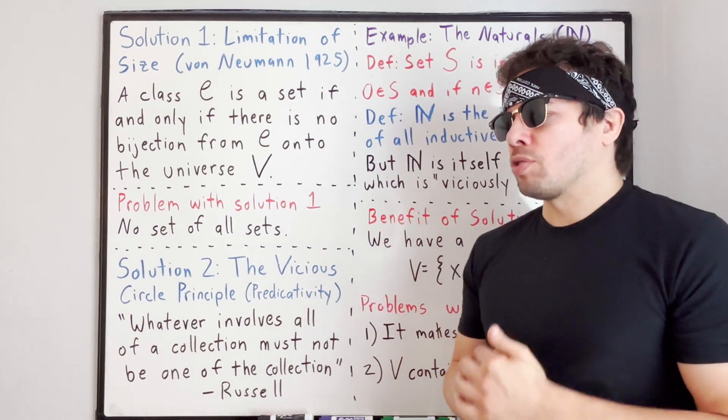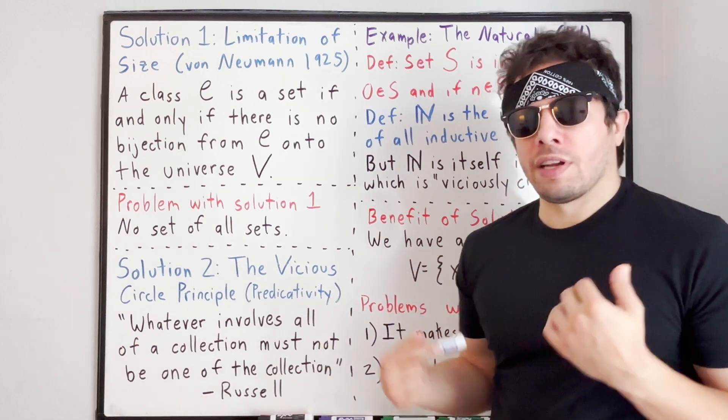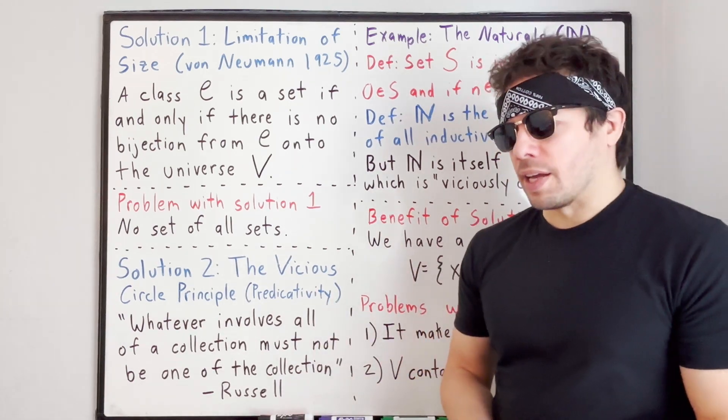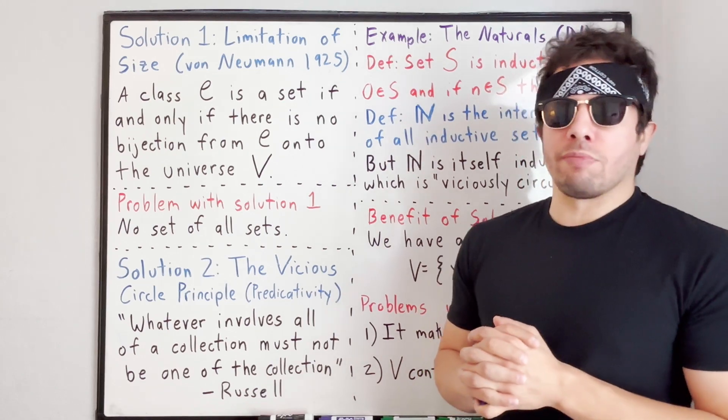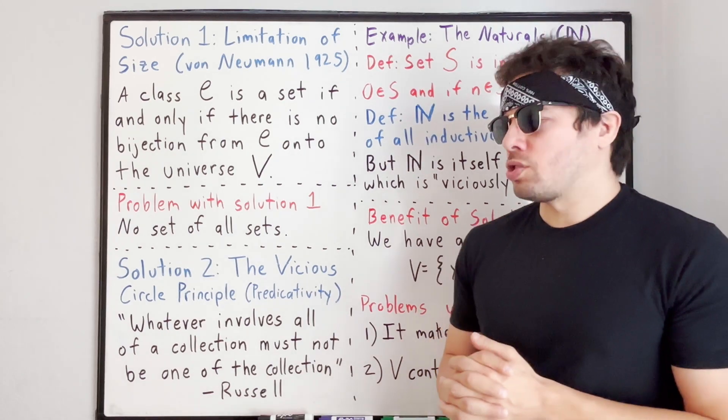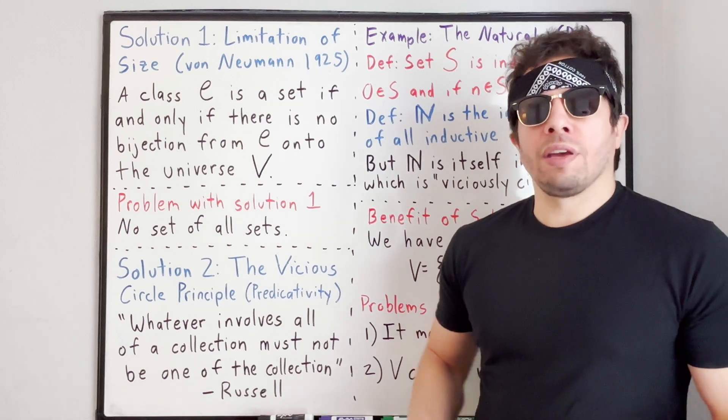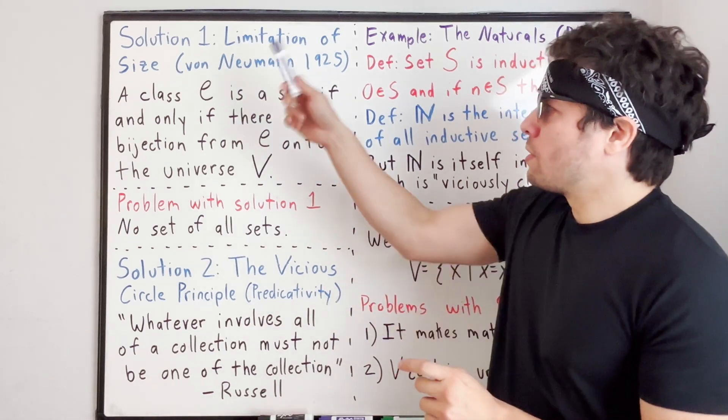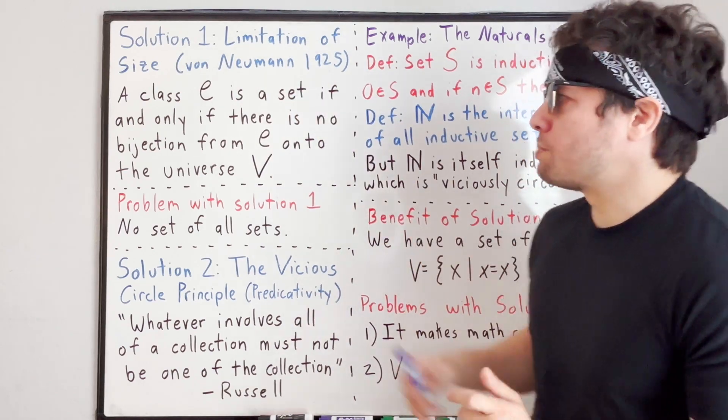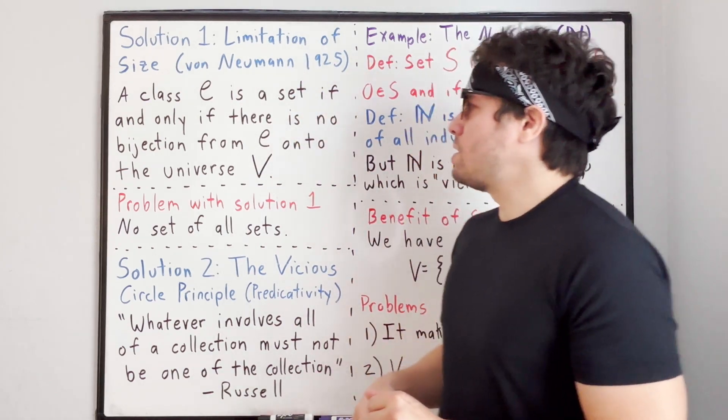Around the turn of the 20th century, Russell's paradox presented a crisis at the heart of mathematics. The naive, intuitive way of thinking about the foundations of math was being called into question. Perhaps the entire thing was built upon a contradiction. The first solution we have here is the limitation of size principle,